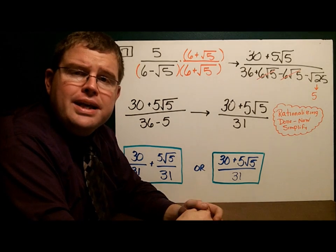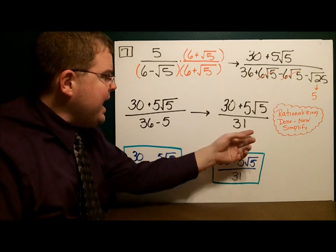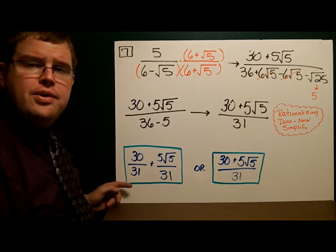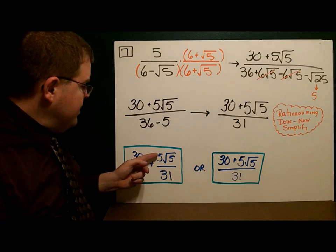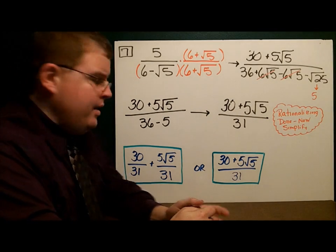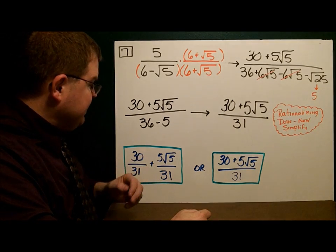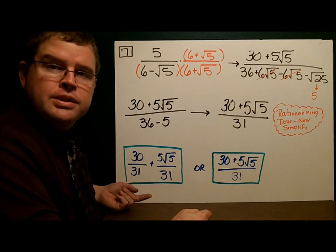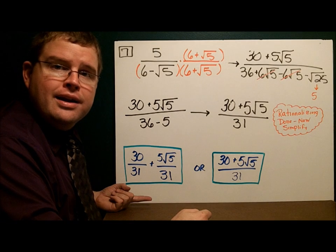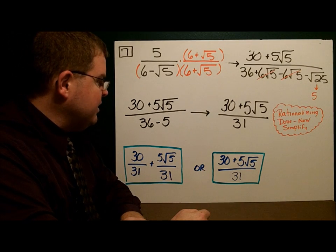Now let's see if we can simplify. We break it in half: 30 over 31 plus 5 square roots of 5 over 31. Neither of these pieces simplifies further, so I could leave my final answer as a single fraction or in the broken-apart form.